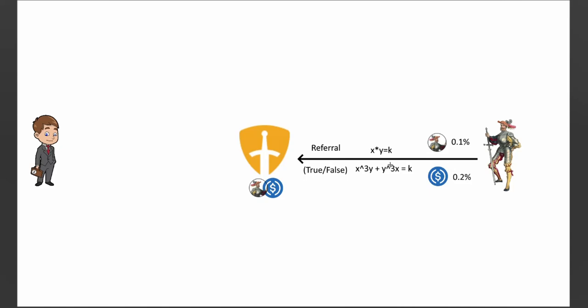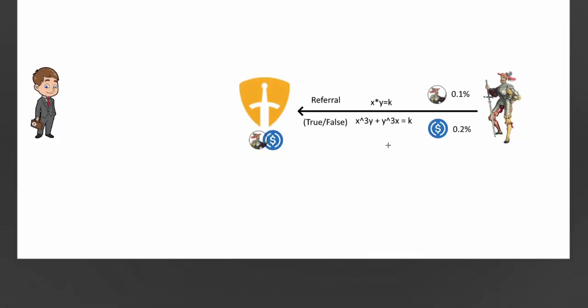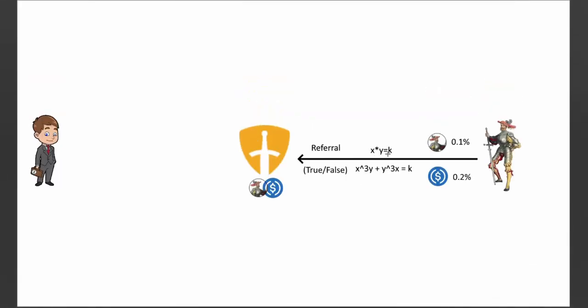He can choose the two different types of LPs. So there's the constant product where basically a token versus another token and the prices are not pegged. And then they have the stable swap as well, where the prices are pegged. So if they were both stable coins, then you could use this stable swap formula instead.